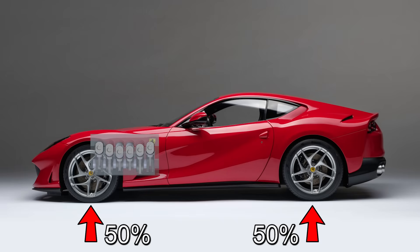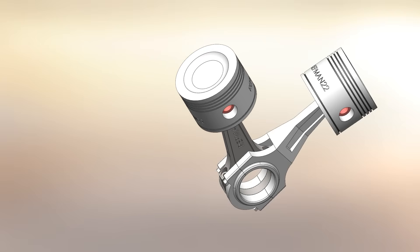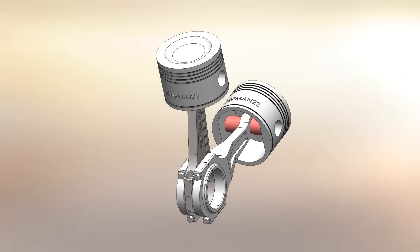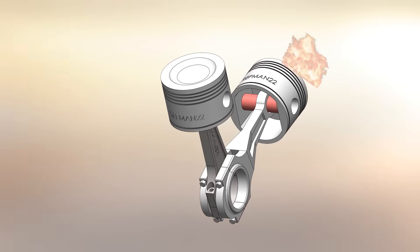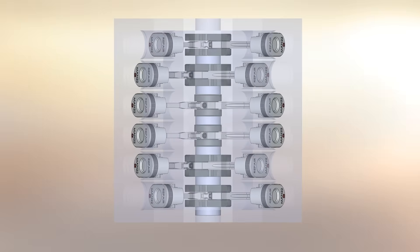The ideal method is using fork and blade rods, where one fits into the other without contact. But this usually requires a longer crank pin than master and slave. Each rod still needs the same bearing surface to handle combustion loads. Ferrari's idea makes it more compact.